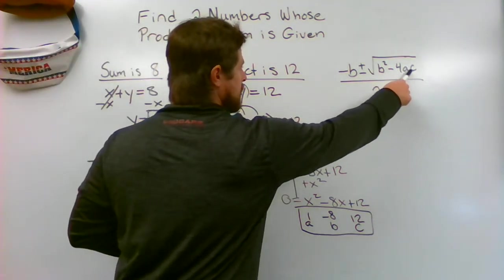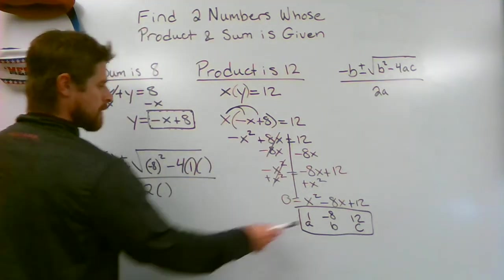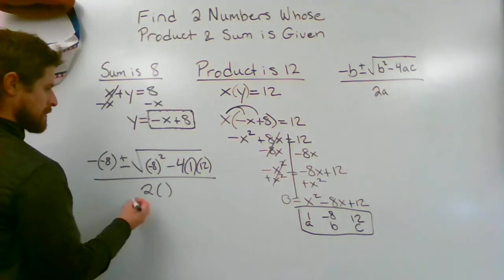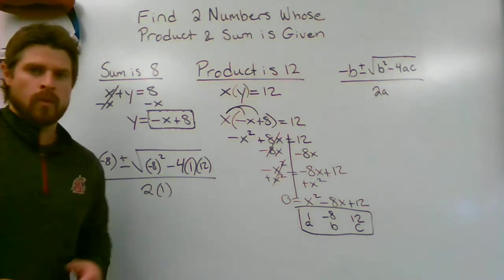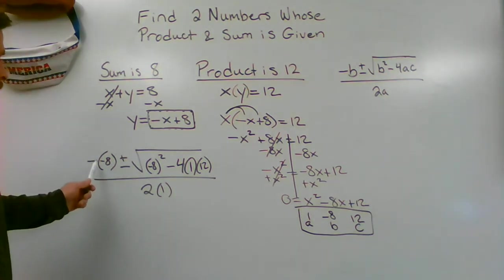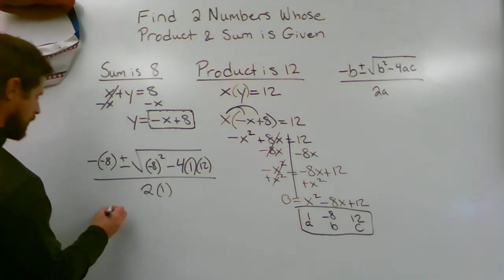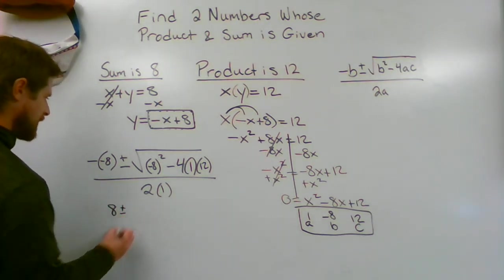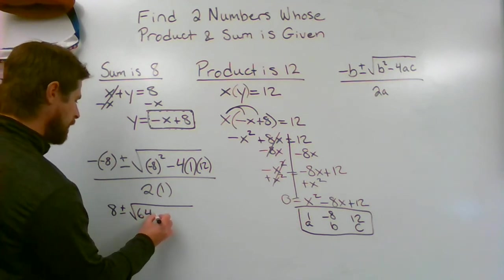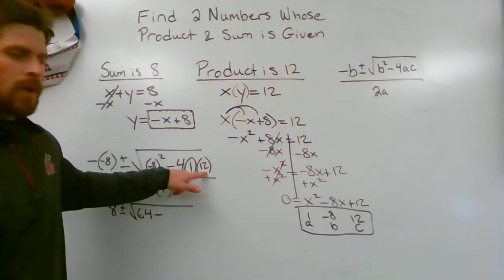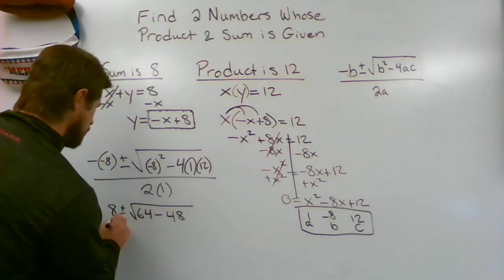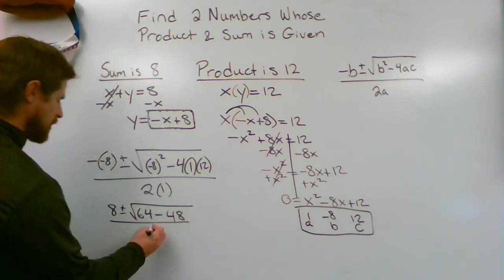4 times A times C, my A is a 1, my C is a 12. And then down here 2 times A, 2 times A is 2 times 1. Once I work this out I'll be left with my solution. So a double negative, negative negative 8 would turn into a positive 8, plus or minus, negative 8 squared which is going to be 64, so I'm going to draw that square root symbol, 64 minus 4 times 1 times 12, 4 times 1 is 4 times 12 gives me 48, divided by 2 times 1 which is a nice neat 2.